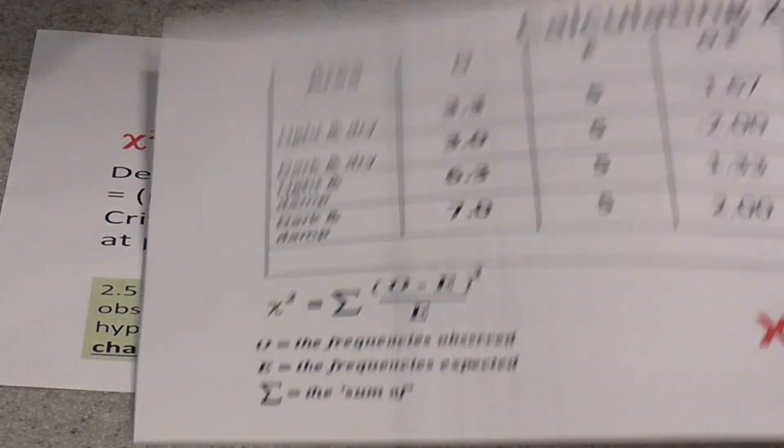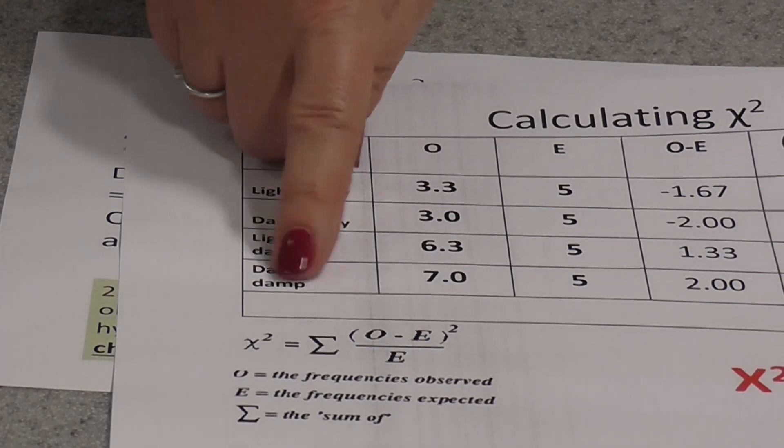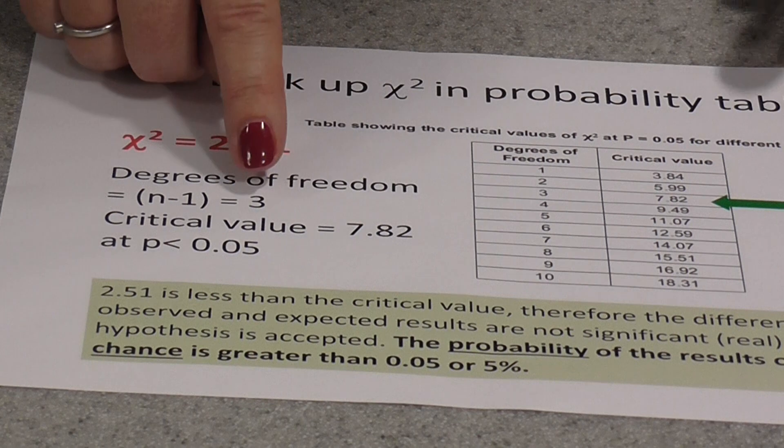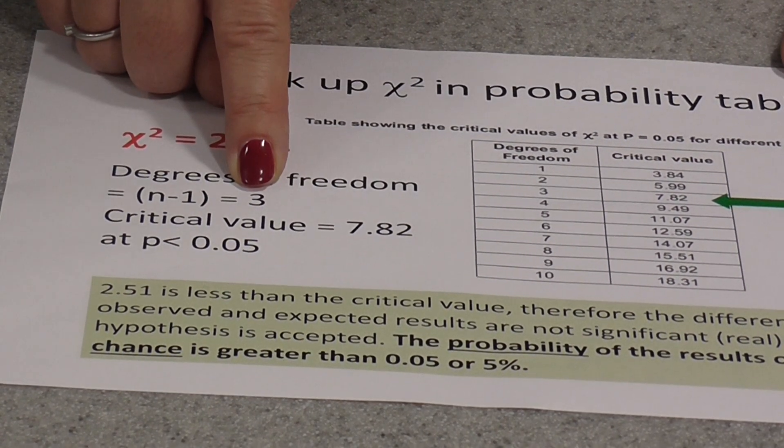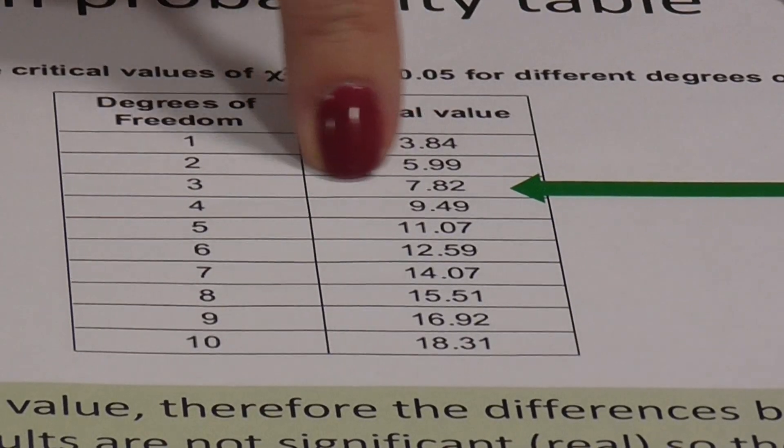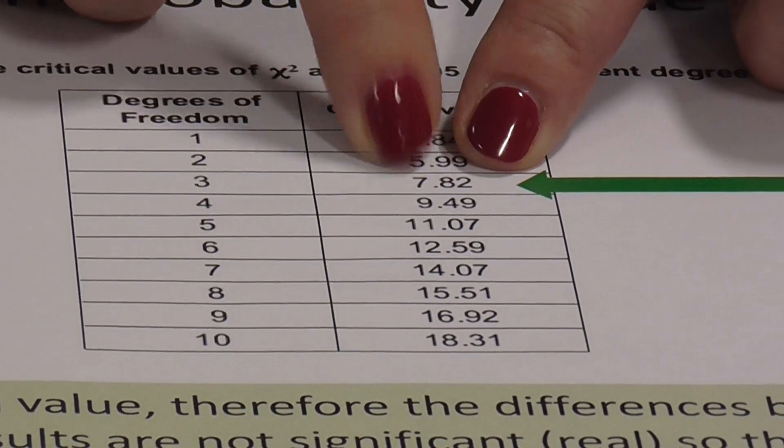We had four different categories, four conditions that we were investigating. So four minus one, we have three degrees of freedom in this investigation. So we now look at our probability table for three degrees of freedom. And this is the critical value.